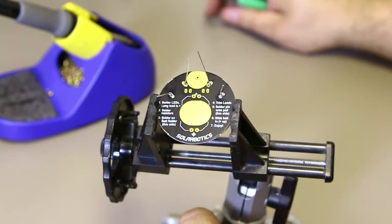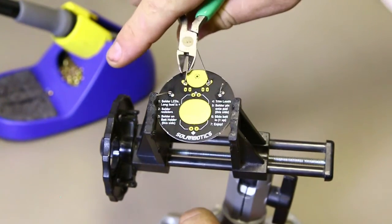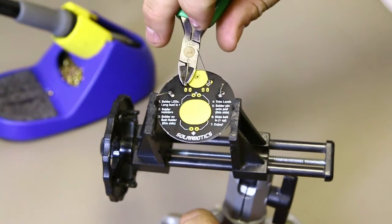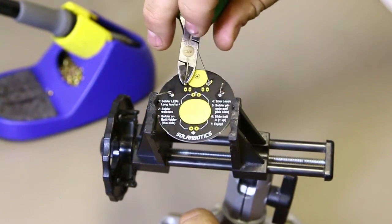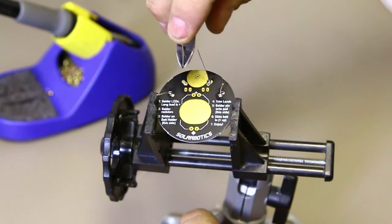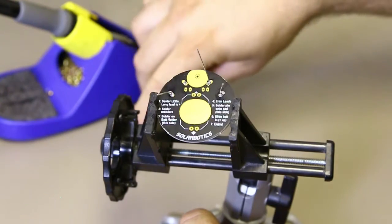Once you're done soldering in the components, you can trim off the legs. One of the things that's important to remember about this is that these little pieces of wire can come flying at your face. That is why you're wearing the safety glasses, but it's also important to put your finger on the end of it whenever you trim the lead to make sure that they don't go flying.